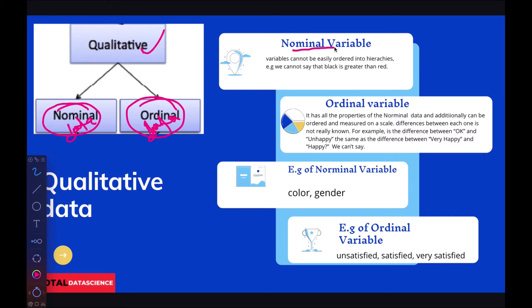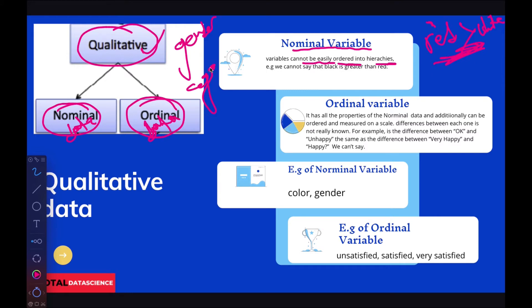Nominal variables cannot be easily ordered into a hierarchy. For instance, you cannot say red is greater than white. You cannot order colors. We have characteristics or attributes, but with nominal data — like gender or color — we cannot say pink is less than brown. That's nominal: qualitative but without any meaningful order.